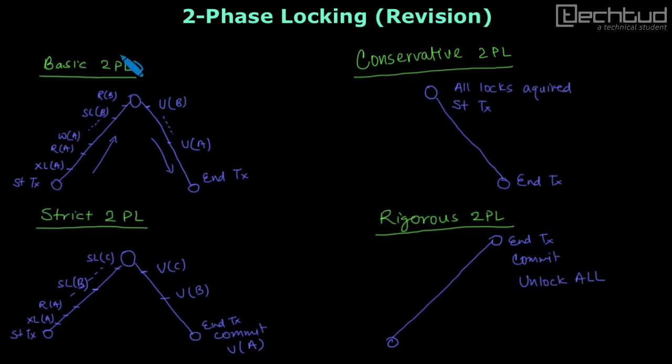Here to start with basic 2PL. In basic 2PL, we have growing and shrinking phase. First thing is we have growing and shrinking phase. Now, in growing phase, a data item is locked but not unlocked.